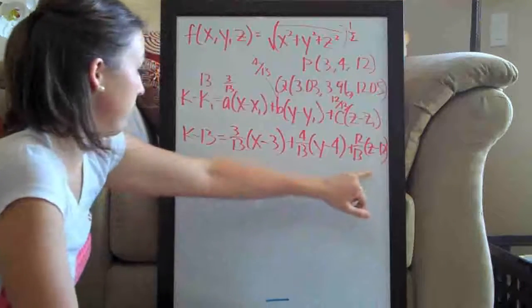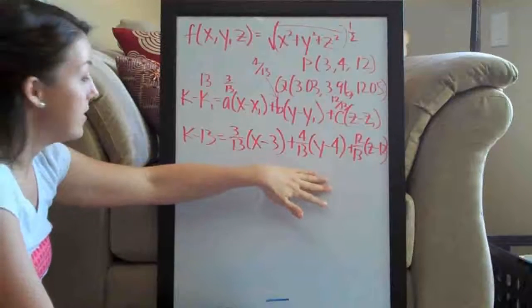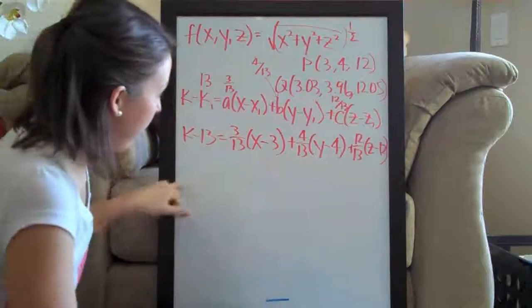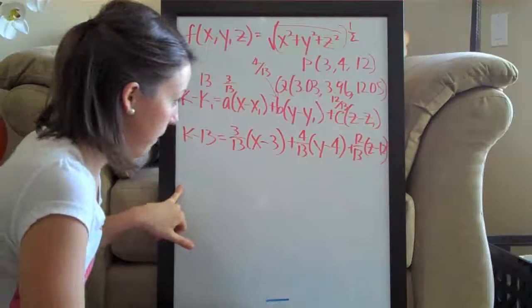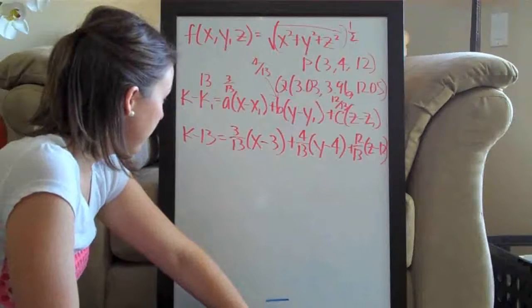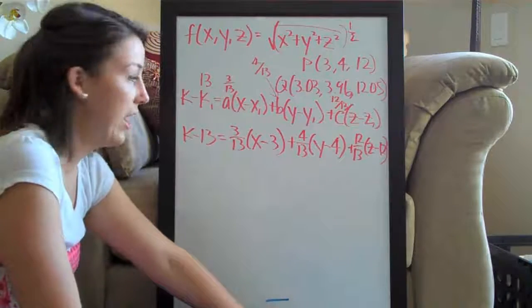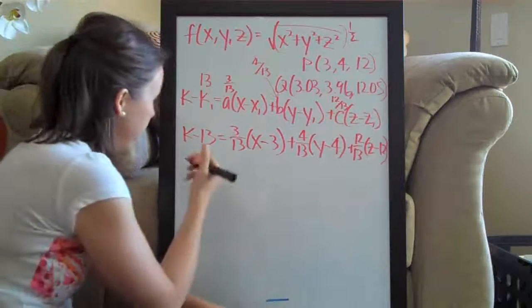Sorry for the cramped spot there. So this is the equation of the tangent plane. We found that part of our solution. You can leave it this way, that's totally fine. You can also simplify this, and I think I'm going to go ahead and simplify because it will end up being a cleaner answer.